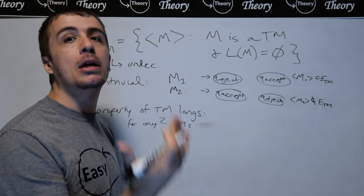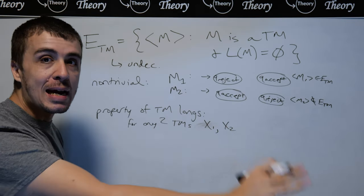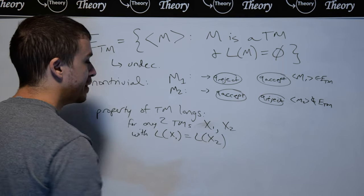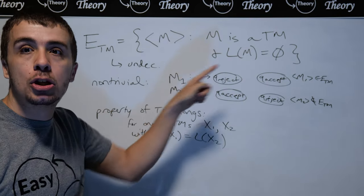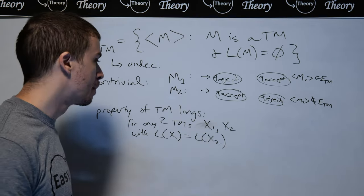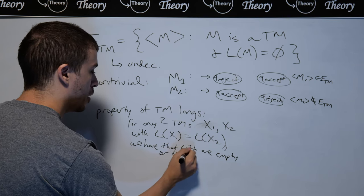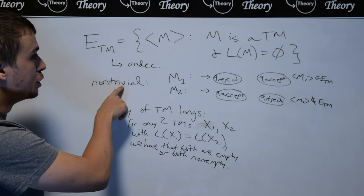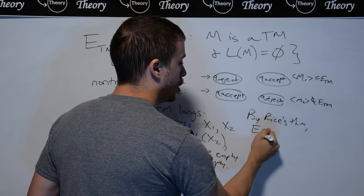I'll call them X1, X2 — any two Turing machines with identically the same language. Is it possible that if they have the same language, one of them has an empty language and the other does not? That's clearly impossible, because we assumed they're the same. So both are empty or both are not empty. Therefore, this is a property of Turing machine languages, and since it was non-trivial, by Rice's theorem this language is undecidable.